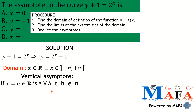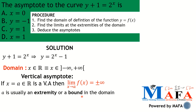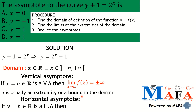First, vertical asymptotes: if the line x equals a (where a is a real number) is a vertical asymptote, then the limit as x tends to a of the function is plus infinity or minus infinity. Note that a is usually an extremity or bound in the domain of definition. Writing your domain in interval notation makes it easy to identify those bounds.